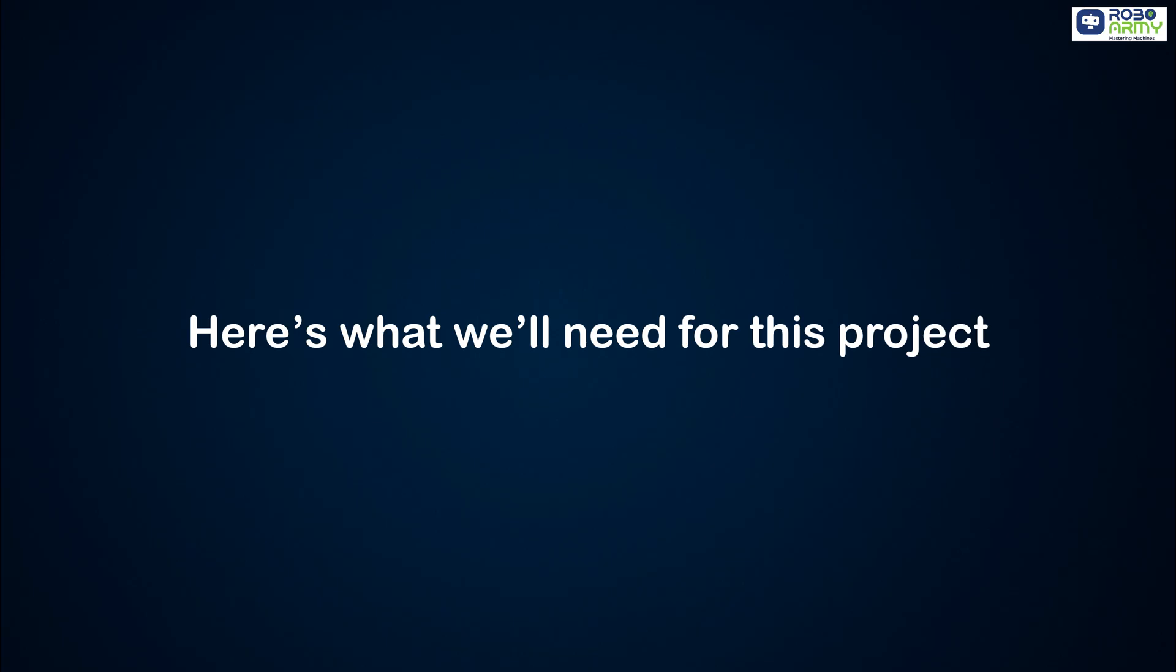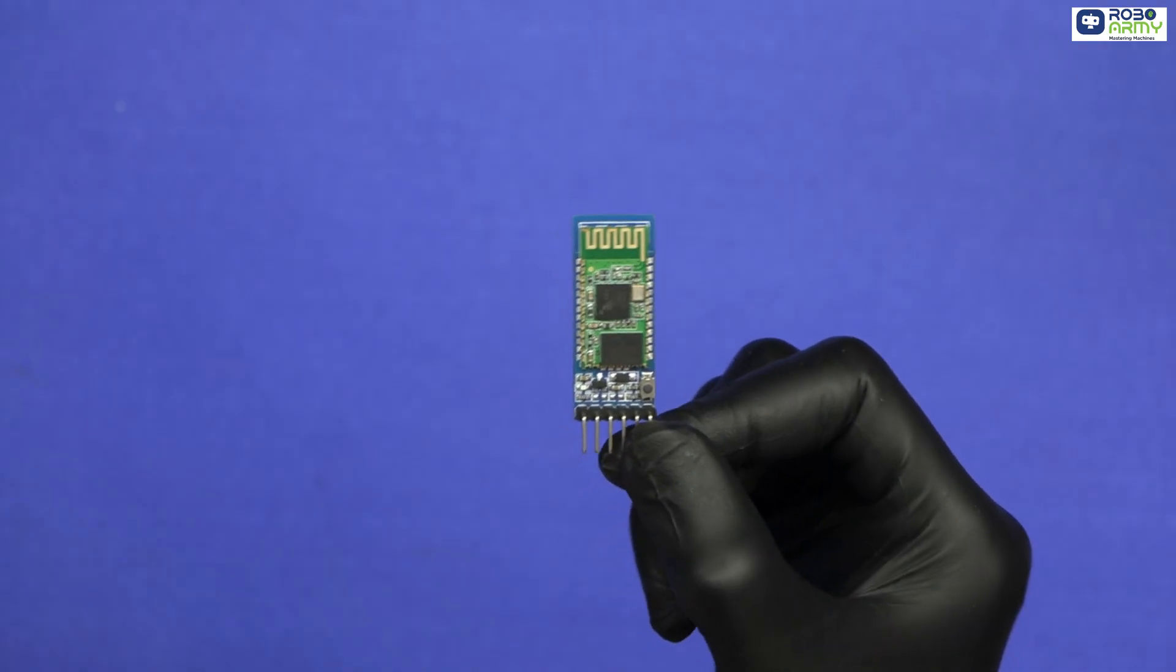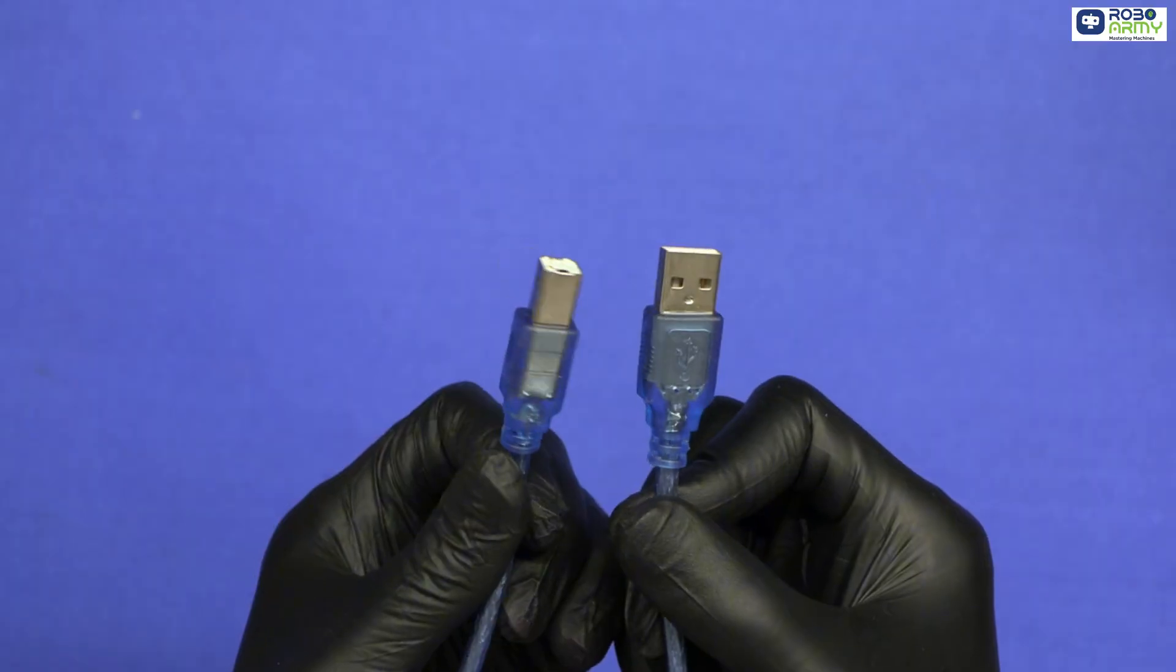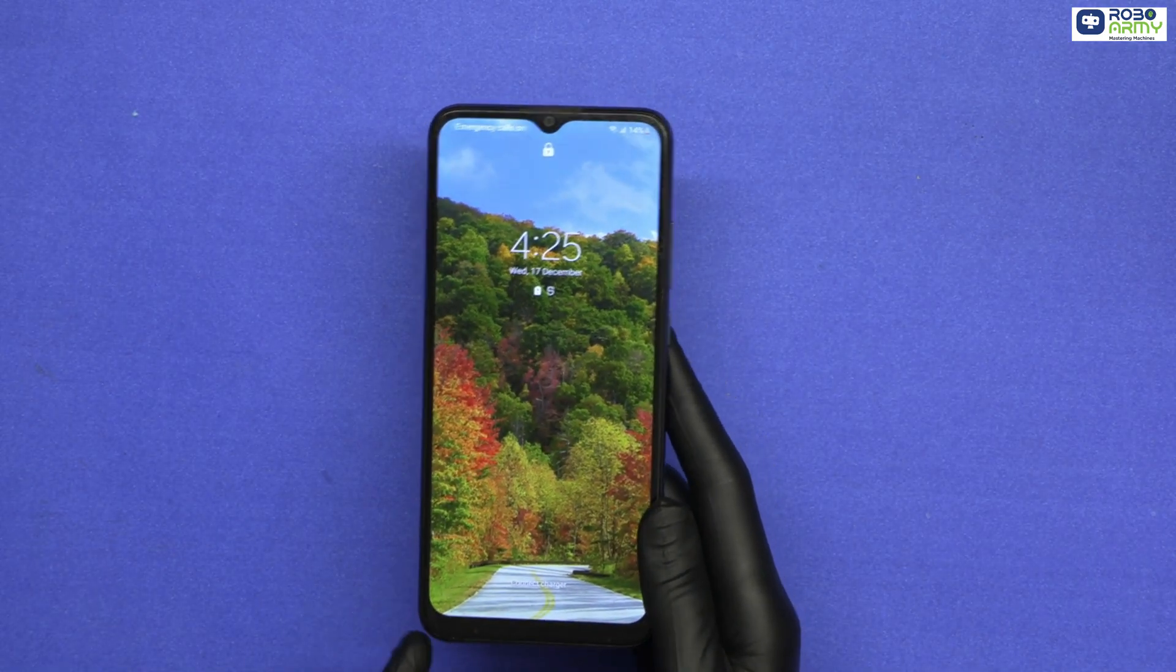Here's what we'll need for this project: an Arduino Uno, one HC05 Bluetooth module, one servo motor, some jumper wires, one USB cable, and one mobile phone to run the Bluetooth voice control app.